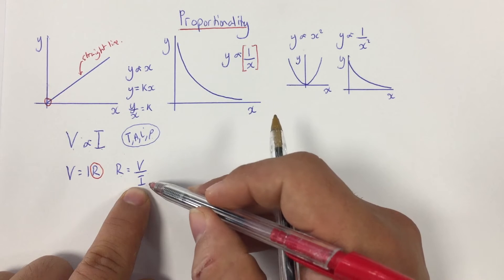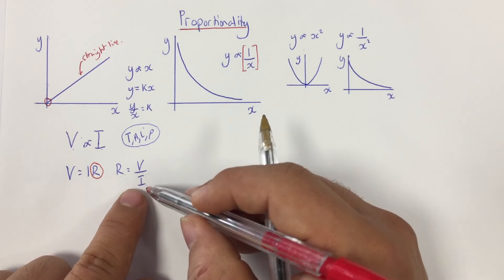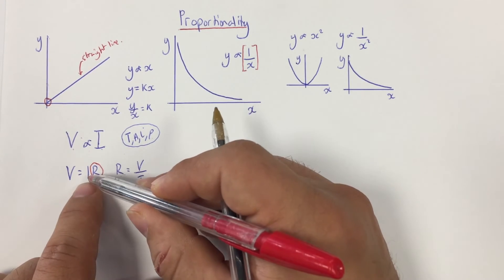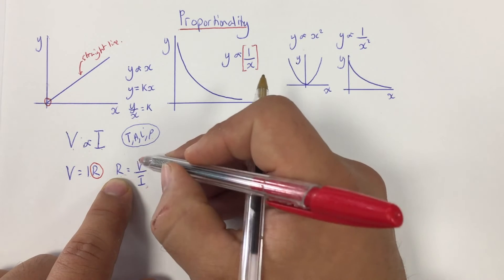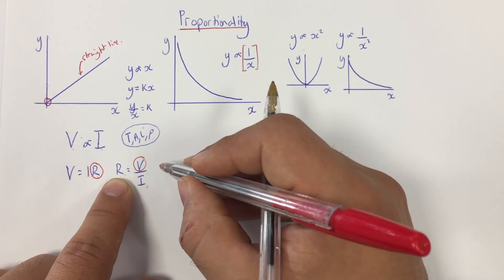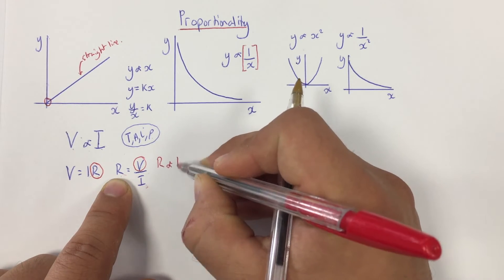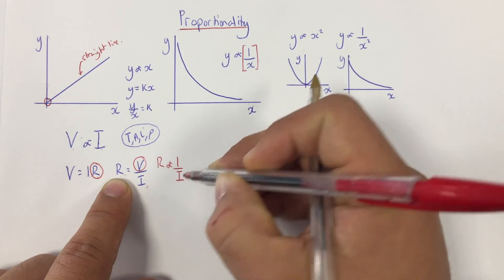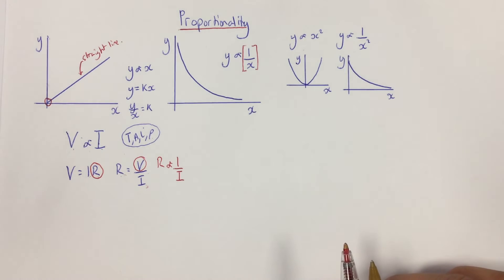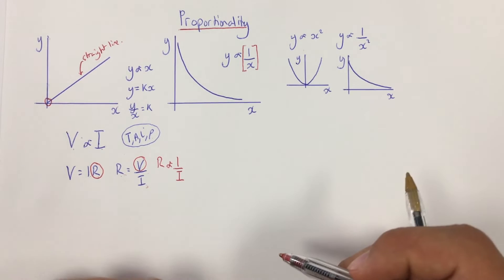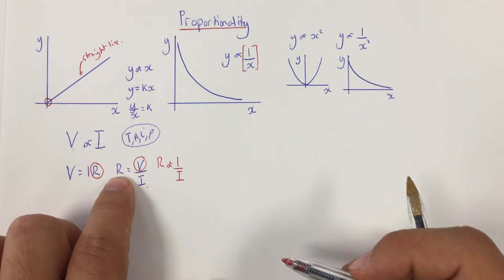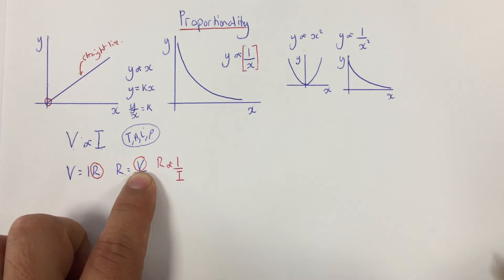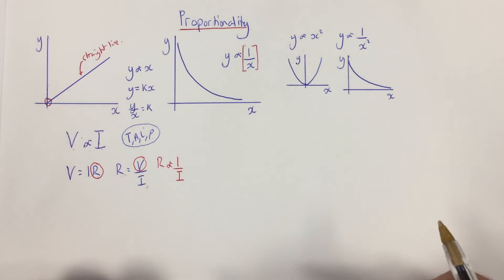We can also see another relationship: resistance and current appear on the same side of the equation, so if I rearrange, current moves to the denominator. If voltage is constant, then resistance is directly proportional to 1 over current — the bigger the resistance, the smaller the current. I can also say that resistance is directly proportional to potential difference, meaning the bigger the resistance, the greater the voltage needed to drive the current. So one equation reveals multiple relationships.